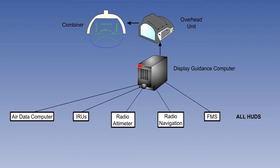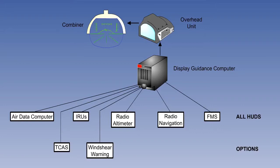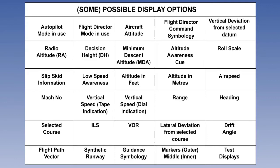However, the display guidance computer can also be programmed to show information from the traffic alert and collision avoidance system, TCAS, the wind shear warning system, the microwave landing system or MLS if fitted, and the global positioning system or GPS. What is actually available on any particular display will depend on the manufacturer and the customer's requirements. The flexibility of modern avionics makes it possible to tailor the displays to any individual airline or aircraft type.